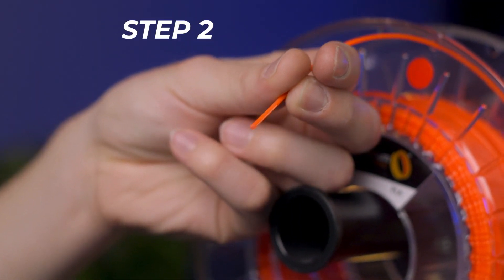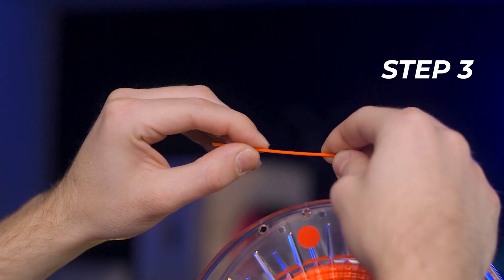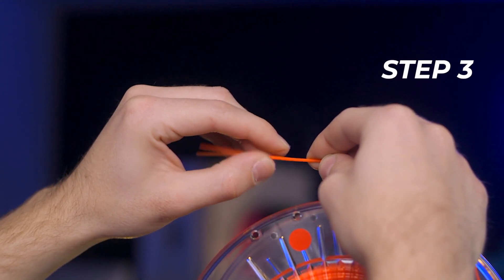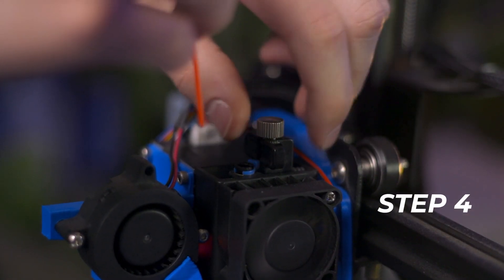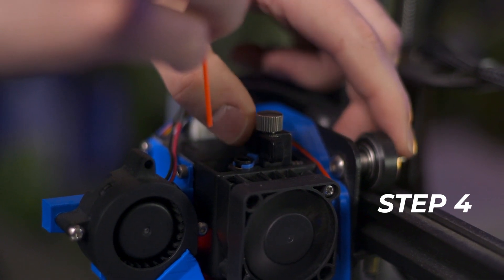This will make it easier to guide the filament into the extruder path. Step 3: Bend the filament slightly to straighten it out and prevent it from curling and missing inside the extruder. Step 4: Relieve pressure on the extruder using the lever or loosening the thumb screw and hold it in place.